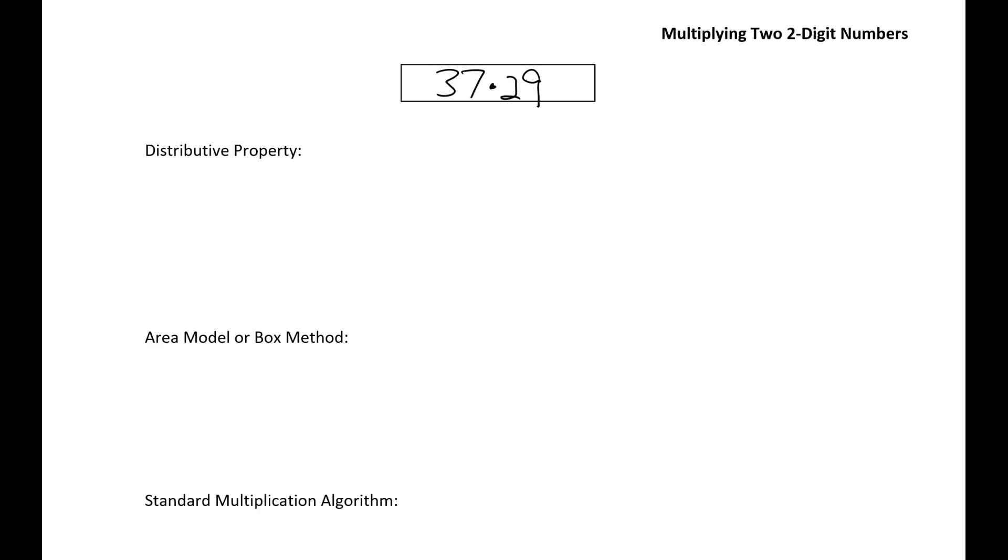And as we know, the distributive property of multiplication is usually written like this: A times B plus C equals A times B plus A times C, where A, B, and C are any numbers.